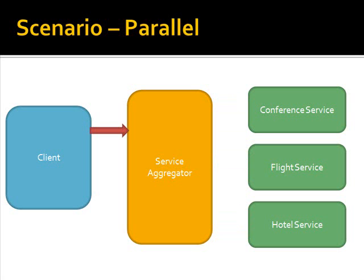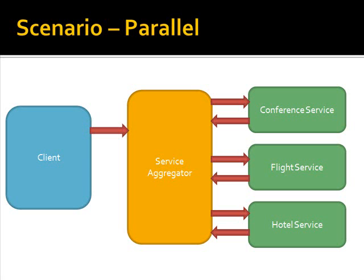I'm going to modify the design so we're calling these in parallel. I've got my client; we will generate an instance of the service aggregator. We'll then send out three messages in an atomic transaction to call all three of these services — the conference, the flight, and the hotel service — in one go. They will be called in parallel, and we'll get our responses back in a non-deterministic order. Once we've got all the responses, we're going to be sending out the response back to the client.